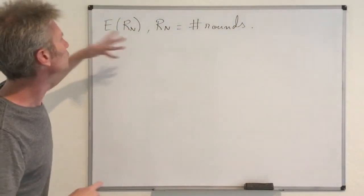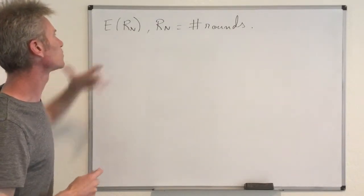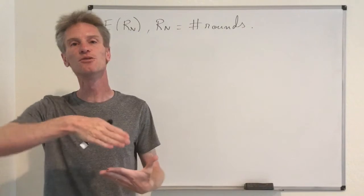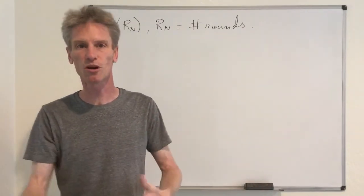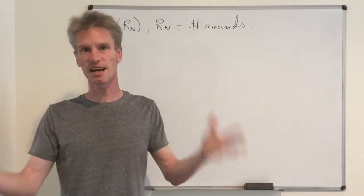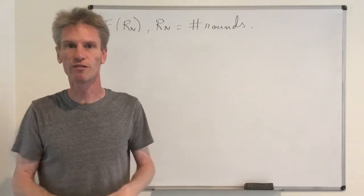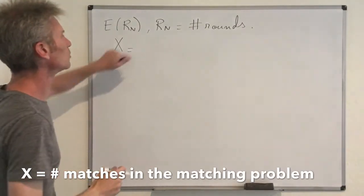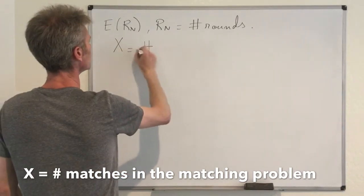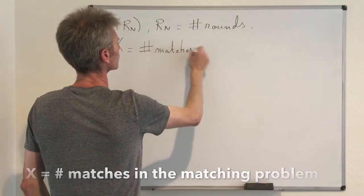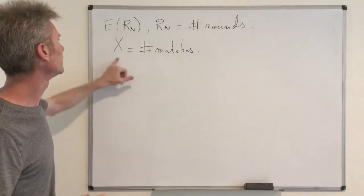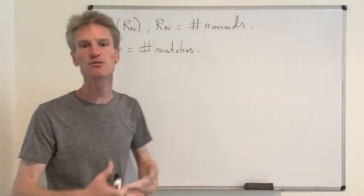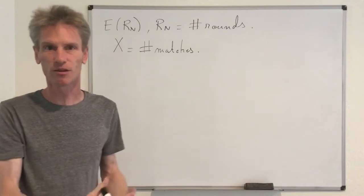The first step is to try to guess what the expected value of Rn should be. For that it helps to study just the matching problem without the rounds. So let's assume we have n couples that are already paired and we want to look at the number of matches. If I call x the number of matches — which depends on n — how can we find the expected value of x? I'm just going to look at the expected value of x to see how many couples are going to be paired on average at each round.